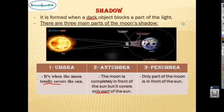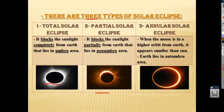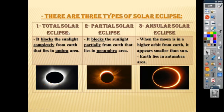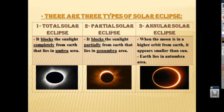Now we are going to learn that there are three types of solar eclipse: total solar eclipse, partial solar eclipse, and annular solar eclipse. In a total solar eclipse, the moon blocks the sunlight completely from earth, and earth lies in the umbra area.